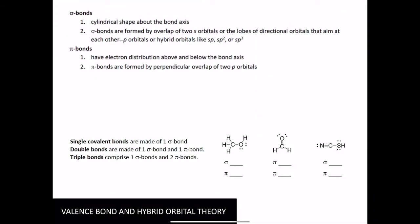Summary. All right, so sigma bonds are electron density between the atoms. Pi bonds have electron density above and below. Single bonds are just a sigma bond. Double bonds are a sigma and a pi. Triple bonds are a sigma and two pi. So look at these molecules and count how many sigmas and pi's you have.